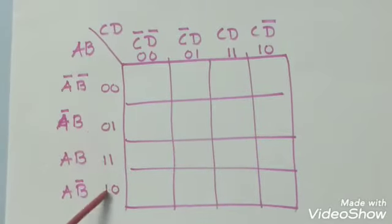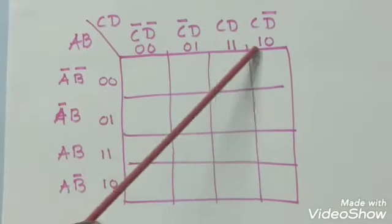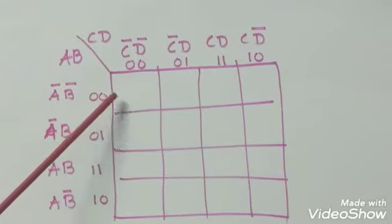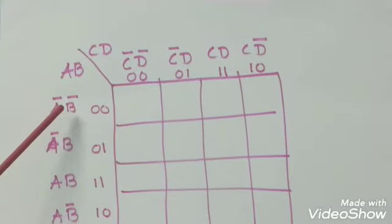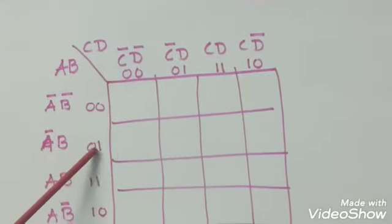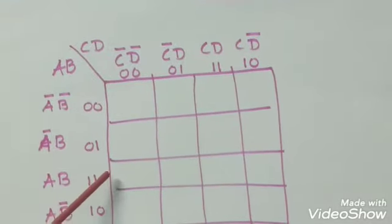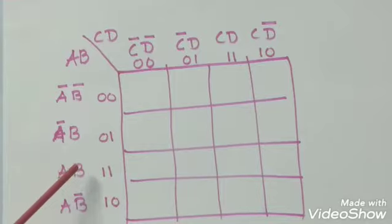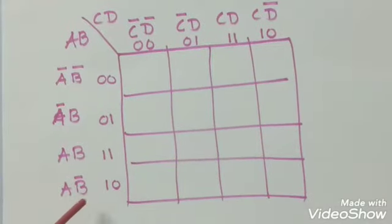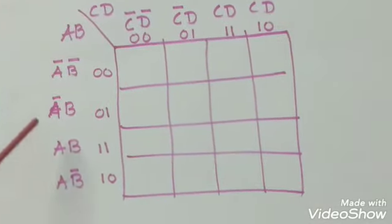Write these values in row side and column side. 0, 0 in first row. That is A bar, B bar. 0, 1 in second row. A bar, B. 1, 1 in third row. A, B. 1, 0 in the fourth row. A, B bar.